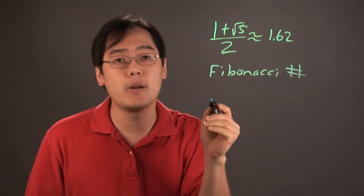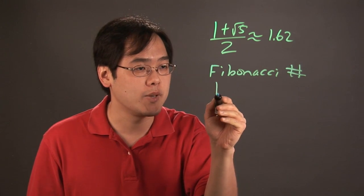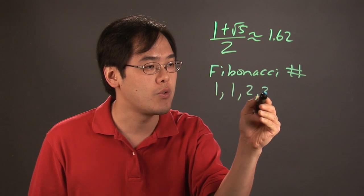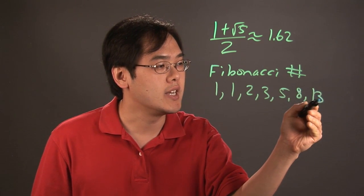Fibonacci numbers are numbers that are part of the Fibonacci sequence. For example, 1, 1, 2, 3, 5, 8, 13, etc.